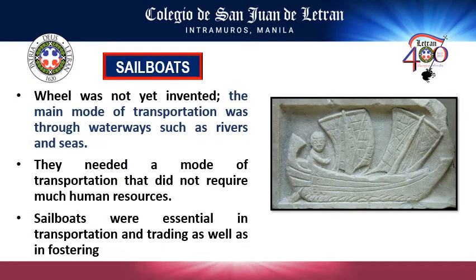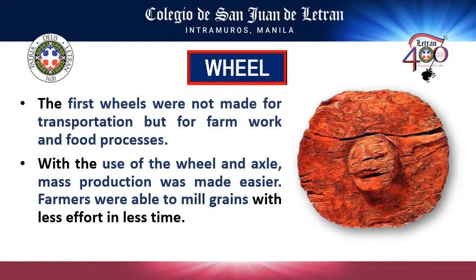The first mode of water transportation was the sailboat, not the wheel. People in the past could not cross rivers and seas without it. The first wheel, meanwhile, was made not for transportation but to mill grains — it was invented to solve the problem of mass production in terms of food supply.